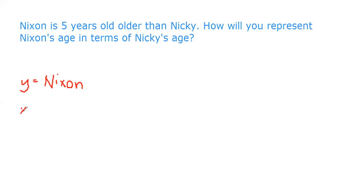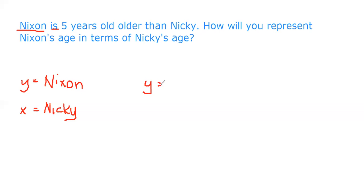Now let's write the equation. We have Y — why Y first? Because 'Nixon is' — in a word problem, 'is' represents the equal sign. So Y is equal to... Nixon is five years older than Nikki. 'Is' represents the equal sign, so Y = ...